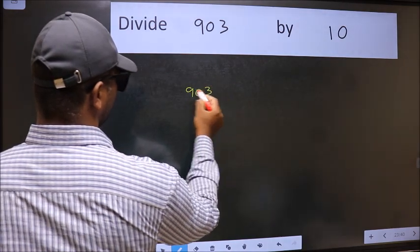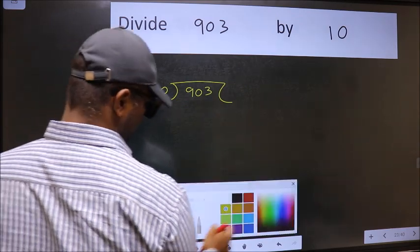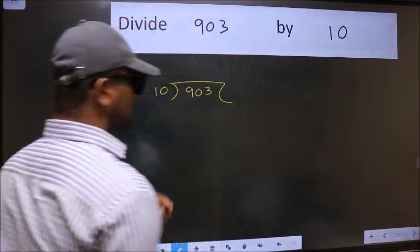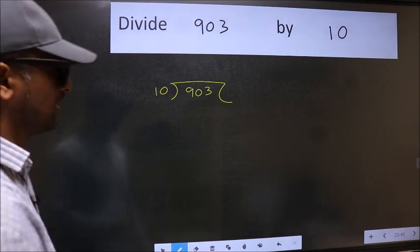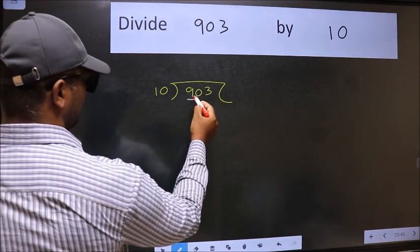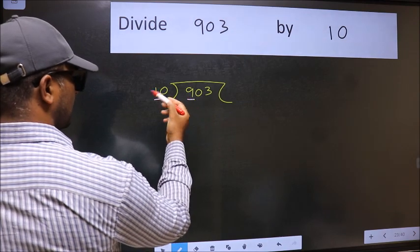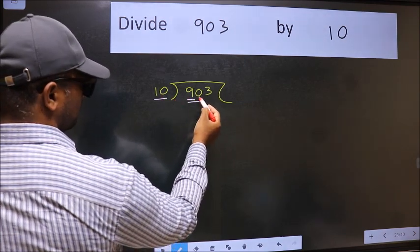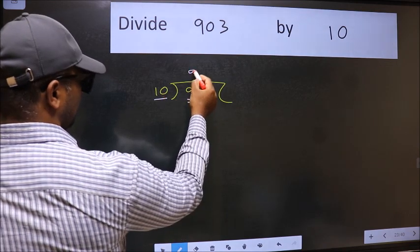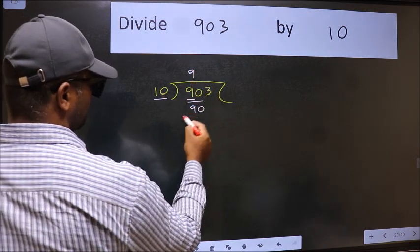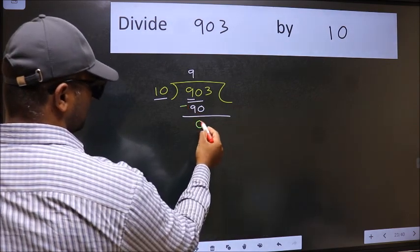903 and 10 here. This is your step 1. Next, here we have 9 and here 10. 9 is smaller than 10. So we should take two numbers, 90. When do we get 90 in 10 table? 10 nines 90. Now we should subtract. We get 0.